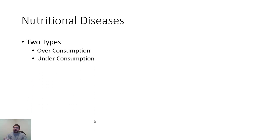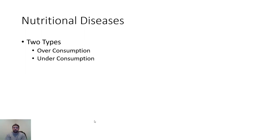Nutritional diseases can be broken into two types: over-consumption and under-consumption. We often think about only under-consumption — a malnourished coyote where you can see its ribs and hip bones because there's so little muscle or fat. But over-consumption is also a problem in fish and wildlife management.